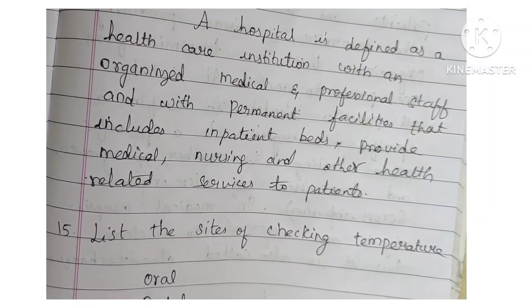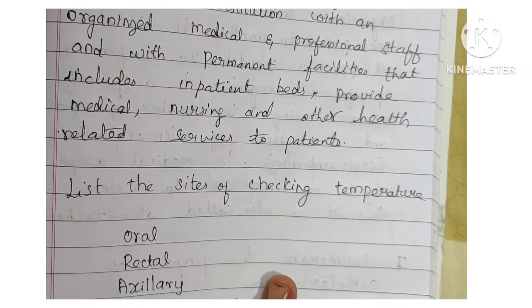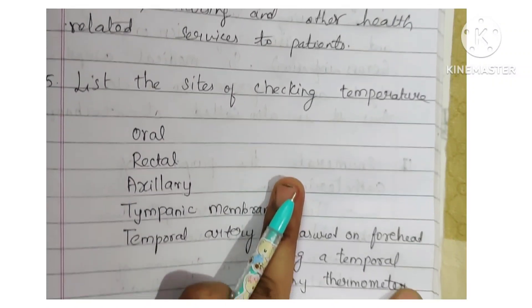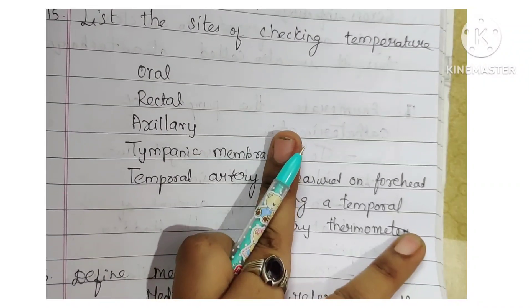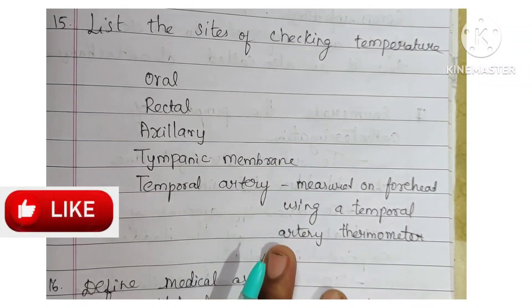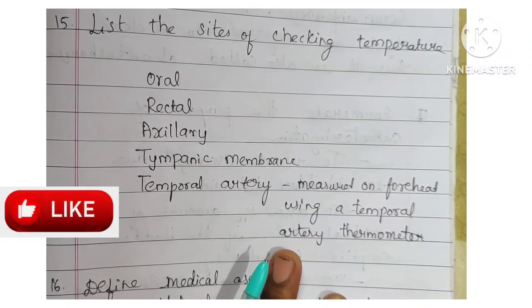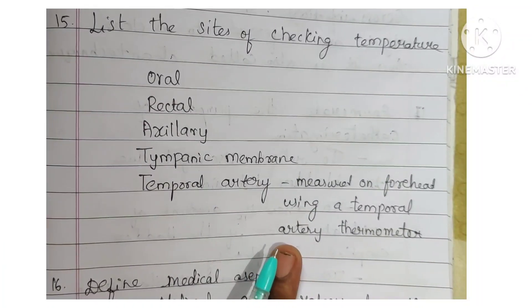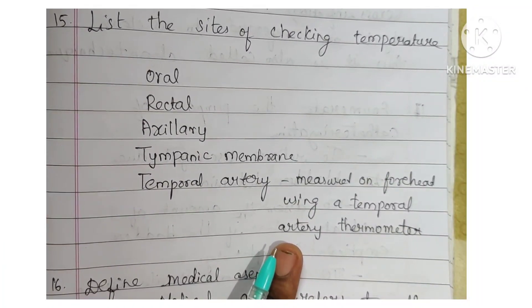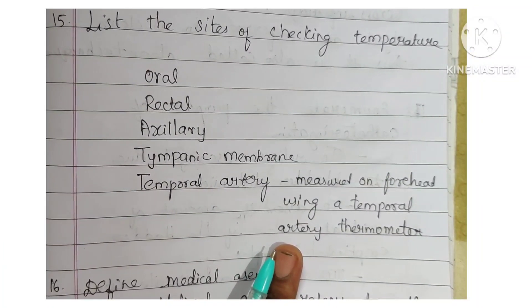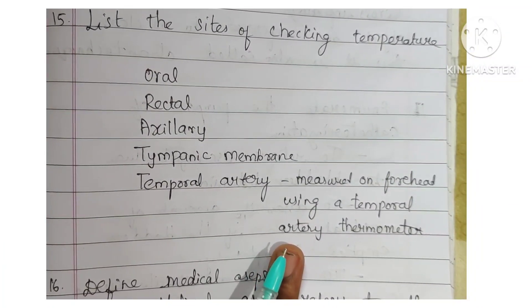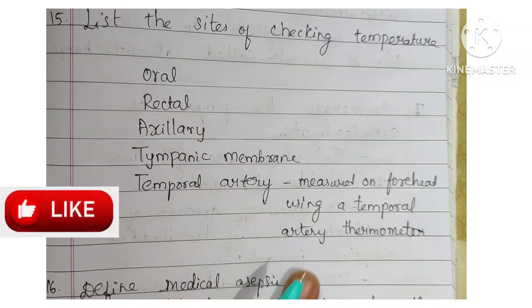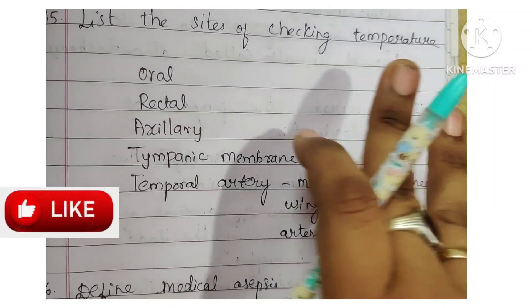List the sites for checking temperature: oral, rectal, axillary, tympanic membrane, and temporal artery — measured on the forehead using a temporal artery thermometer.